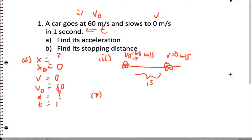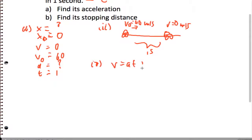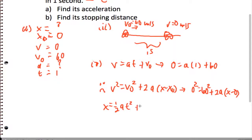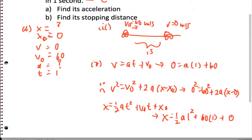For step four, I'm going to plug every number into every equation. Starting with V equals AT plus V-naught: zero equals A times 1 plus 60. For the second equation, V-squared equals V-naught-squared plus 2A(X minus X-naught): zero-squared equals 60-squared plus 2 times A times (X minus 0) — can't solve that yet. For the third equation, X equals one-half AT-squared plus V-naught-T plus X-naught. The only equation I can solve to begin with is the first one, giving an acceleration of negative 60 meters per second squared.